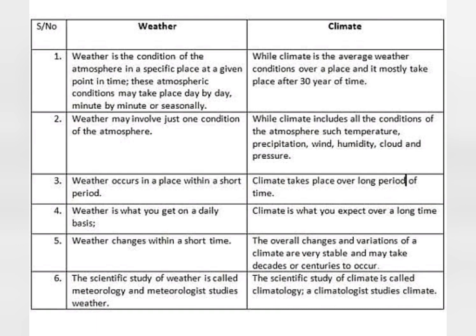Weather occurs in a place over a short period, whereas climate takes place over a long period of time. The scientific study of weather is called meteorology, and a meteorologist studies weather. The scientific study of climate is called climatology, and the person who studies this is known as a climatologist.